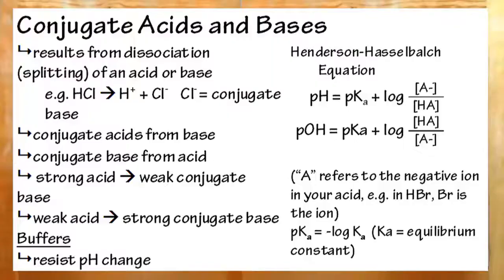To recap, conjugate acids come from a base dissociating, and conjugate bases come from an acid dissociating. Like up here with hydrochloric acid, your conjugate base is the Cl minus, because it can accept H plus ions.